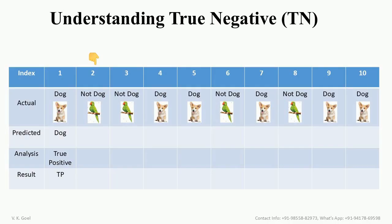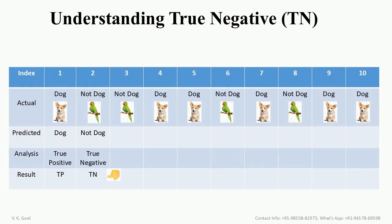Consider case number 2. In actual, it's the parrot image, and therefore it's 'not dog.' Now, say it is truly predicted as 'not dog.' Because the result is true and it is actually true negative, it is called as true negative, that is TN.